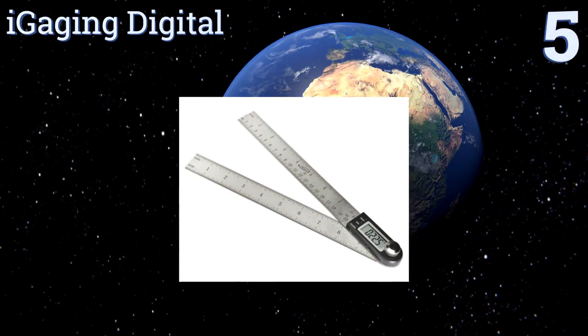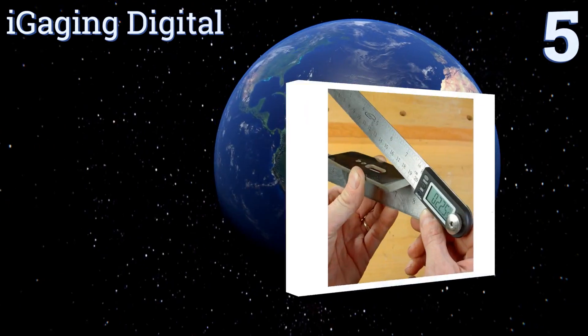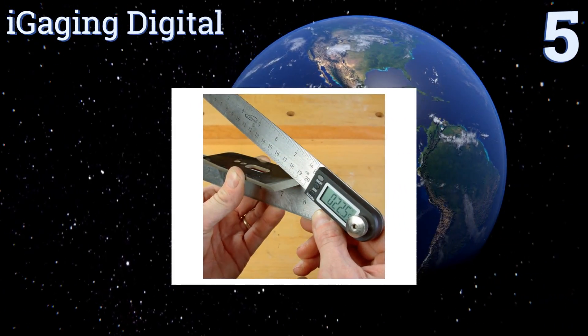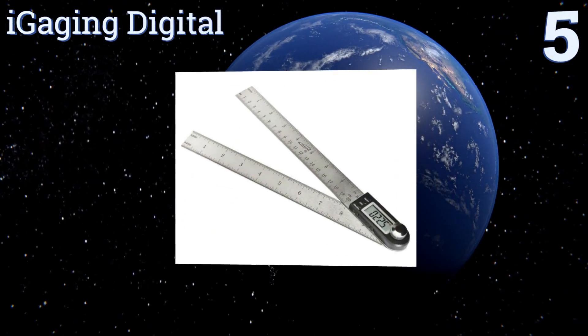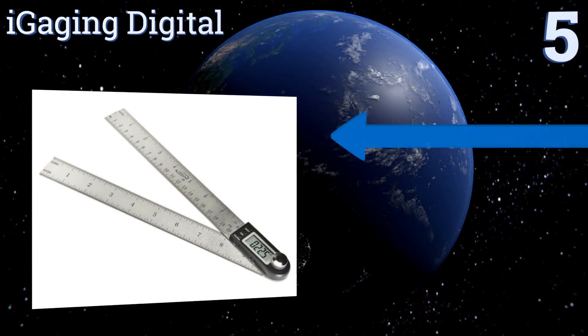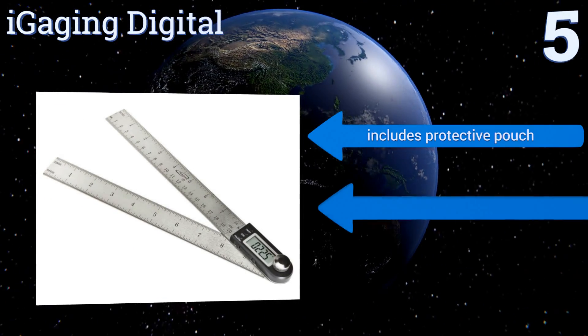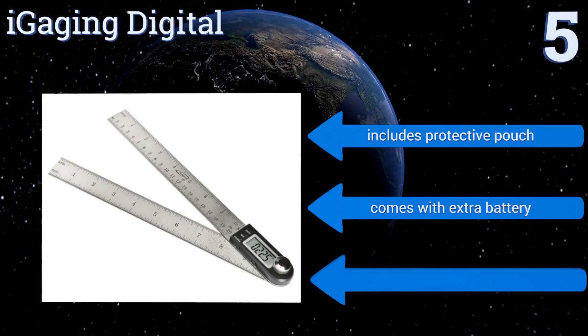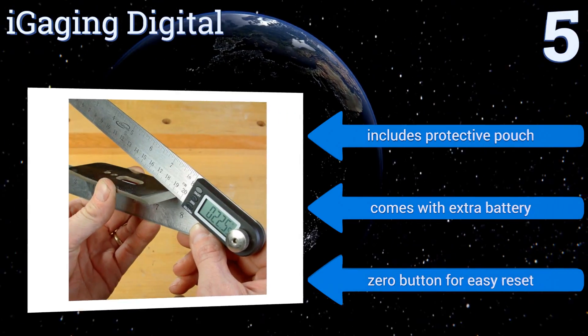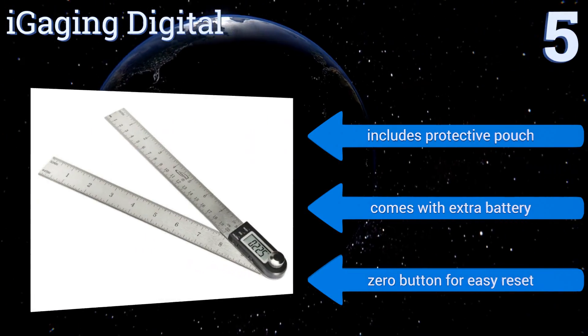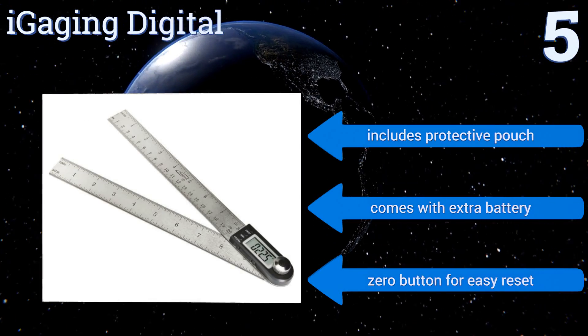Halfway up our list at number five, the iGaging Digital is constructed to provide precise measurements of angles in 0.05 of a degree increments. The digital readout is versatile, displaying accurately on the LCD screen even when the protractor is upside down or set at odd angles. It includes a protective pouch and an extra battery, along with a zero button for easy resetting.